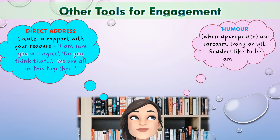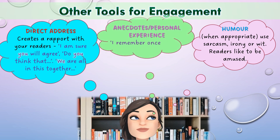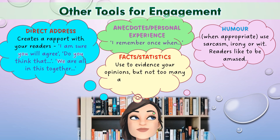Humour is an effective tool as well, but only when appropriate, because people like to be amused and entertained. You can use sarcasm, irony, or wit. Anecdotes or personal experience — little stories that you can tell the reader to make you seem like a real person and not just an information sheet, for example 'I remember once when...' — can also be quite emotive and create an emotional connection between you and your reader. Finally, use facts and statistics as evidence to support your opinions. We want the reader to believe in what we're saying, but don't bombard them — don't use too many, as this may reduce engagement. We want to keep that conversational flow going.